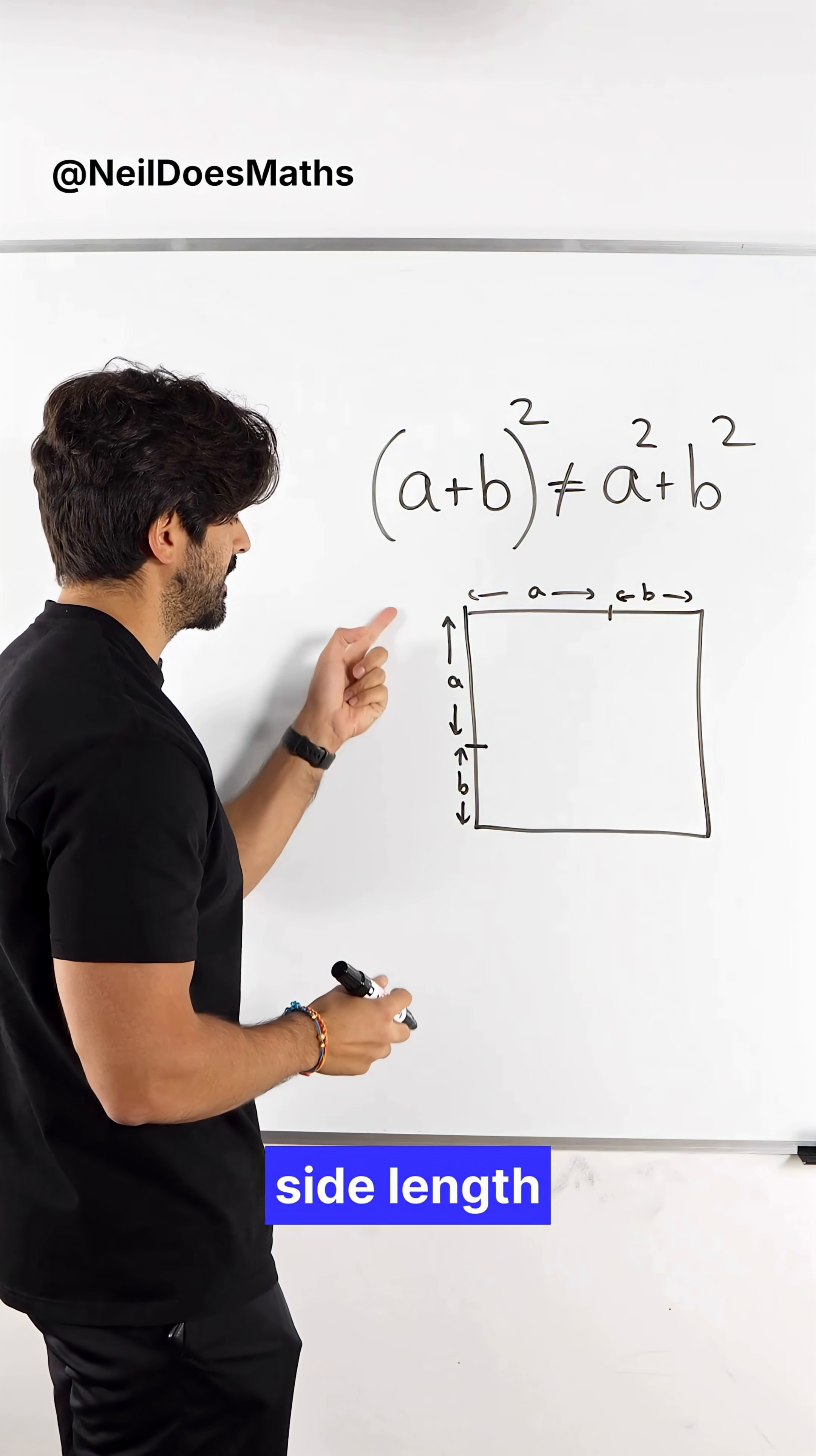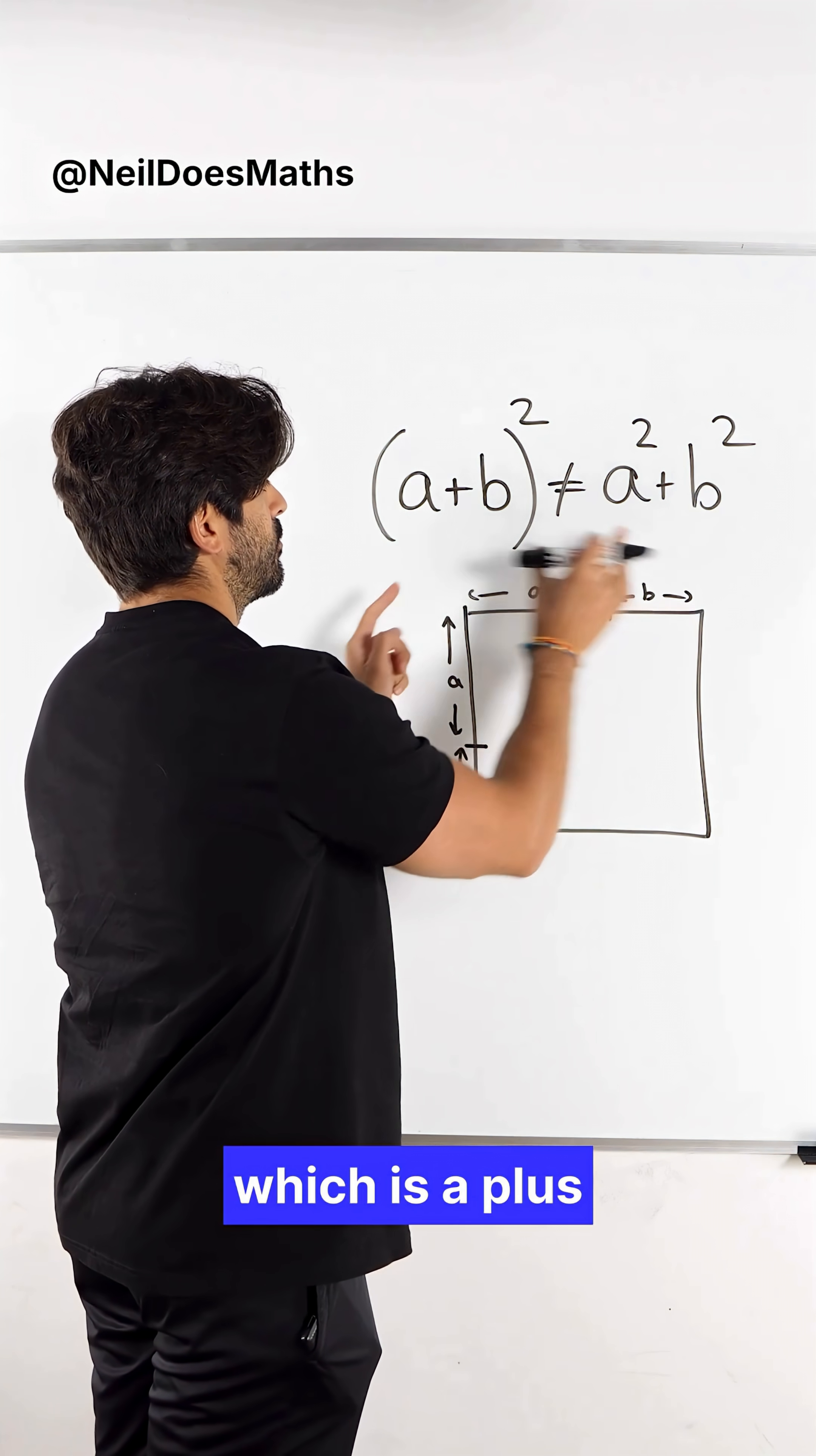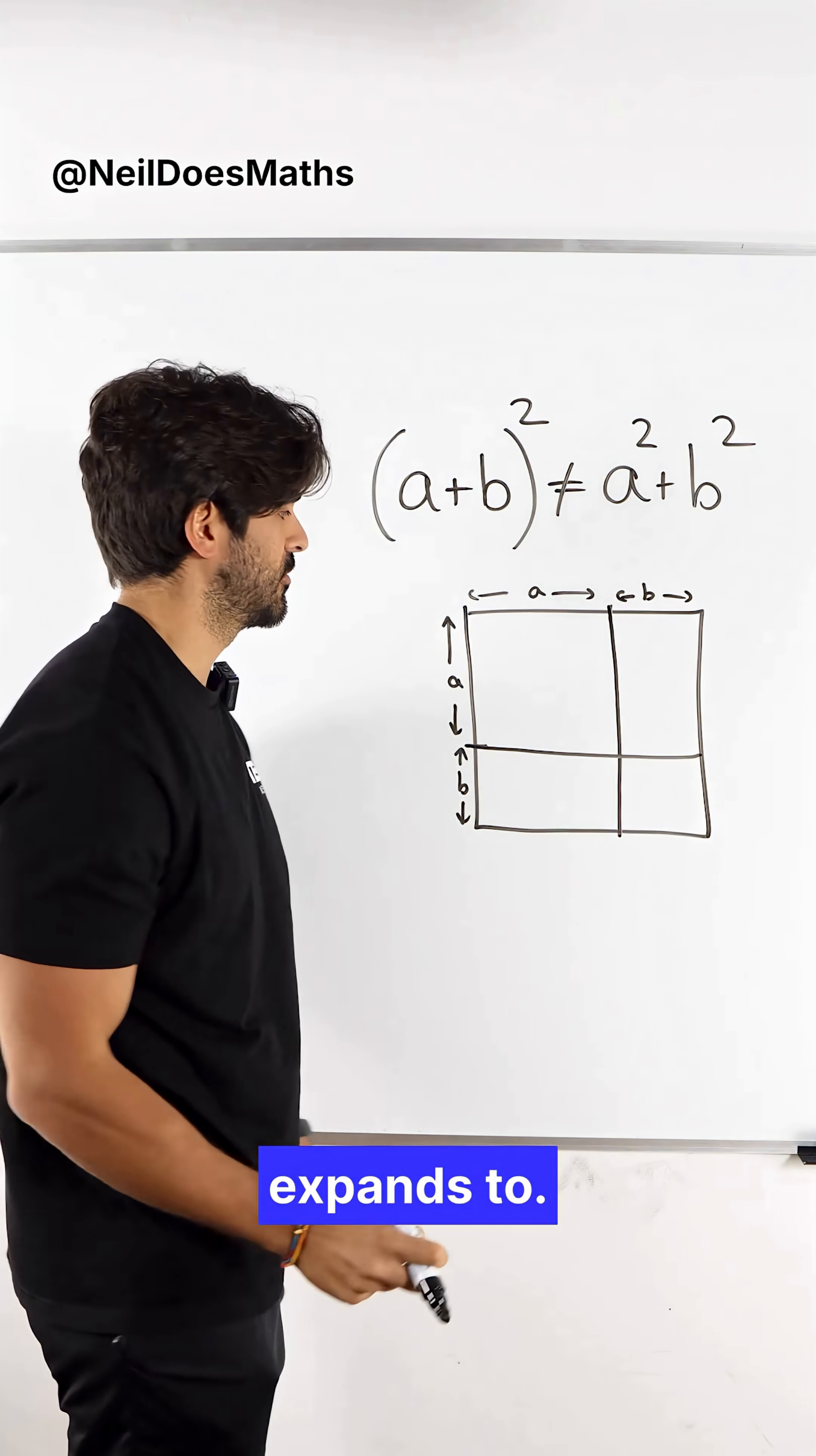So that way this side length here is a plus b and this side length here is a plus b. So the area is going to be a plus b times a plus b, which is a plus b squared. But when I split up this shape like this, let's see what it actually expands to.